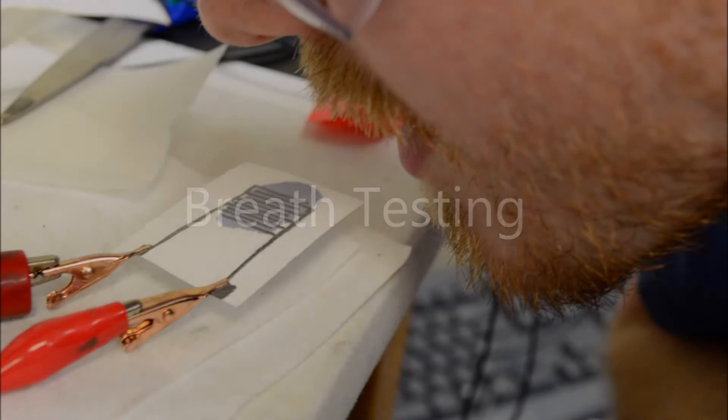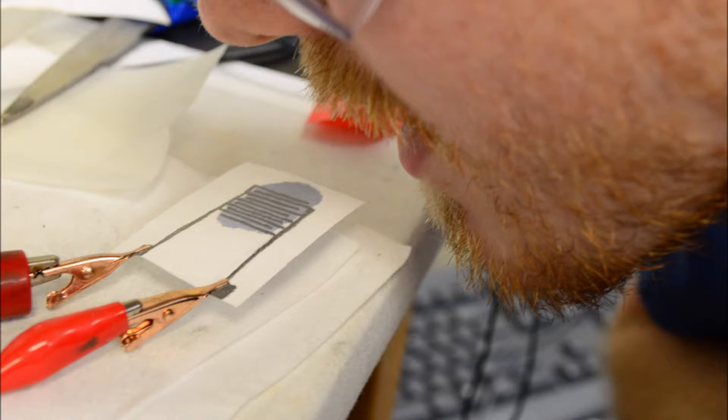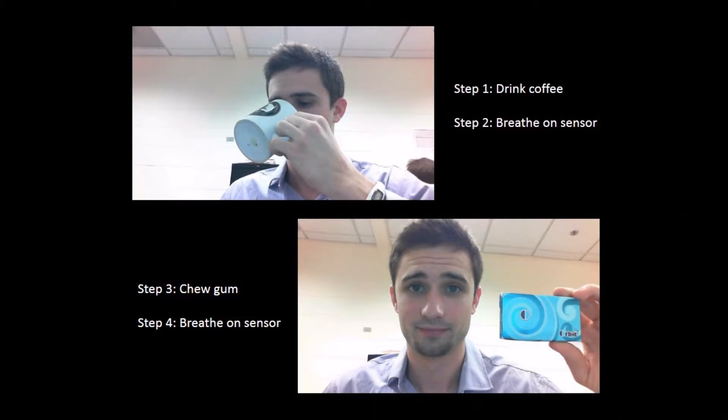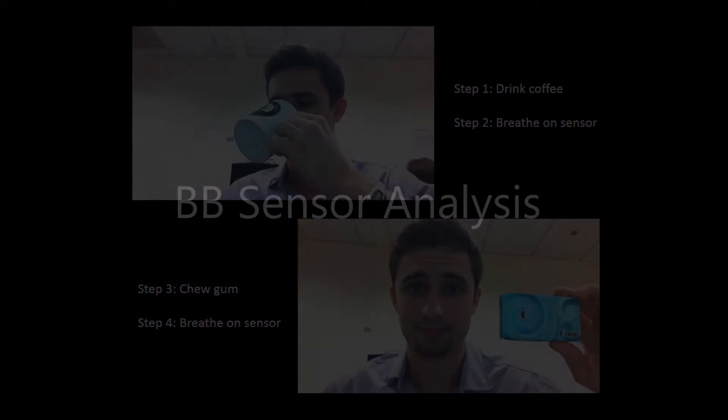Testing the devices was done using a potentiostat in constant current mode. A volunteer breathed on the device and the voltage change, corresponding to a change in conductance, was recorded. The volunteer would either chew gum, making fresh breath, or drink coffee, making bad breath, before testing the device.